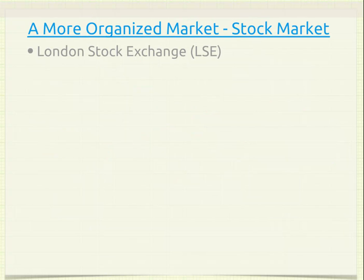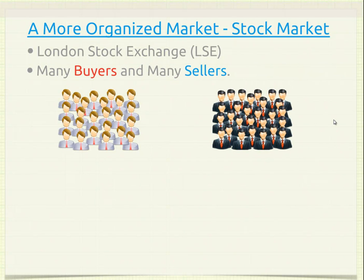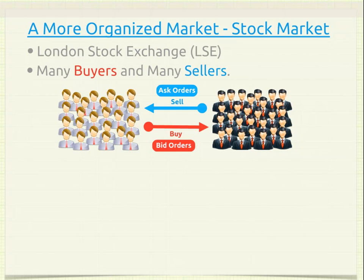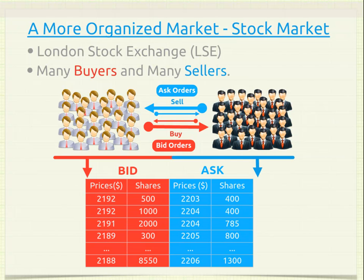Looking at more organized markets such as the London Stock Exchange, we have many buyers and many sellers. Buyers buy by making bid orders and sellers sell by making ask orders. Roles can reverse in this market where buyers can become sellers and sellers can become buyers. These orders placed by both participants are fed into a common platform known as the order book. We look into the order book to identify the best bid and the best ask — the best prices from both sides.